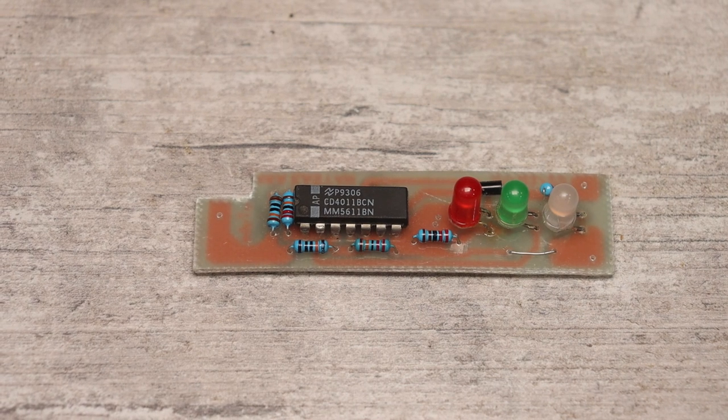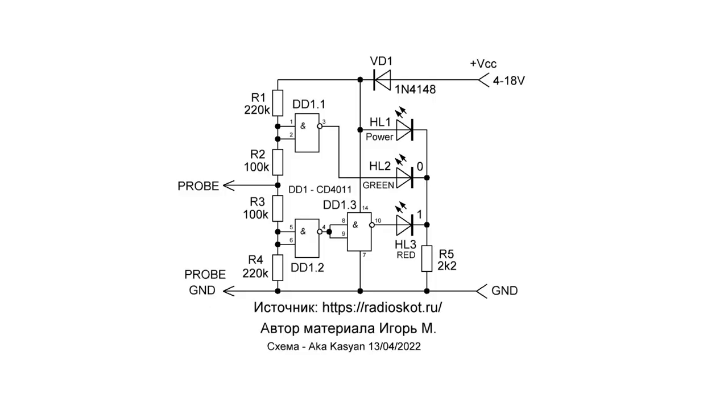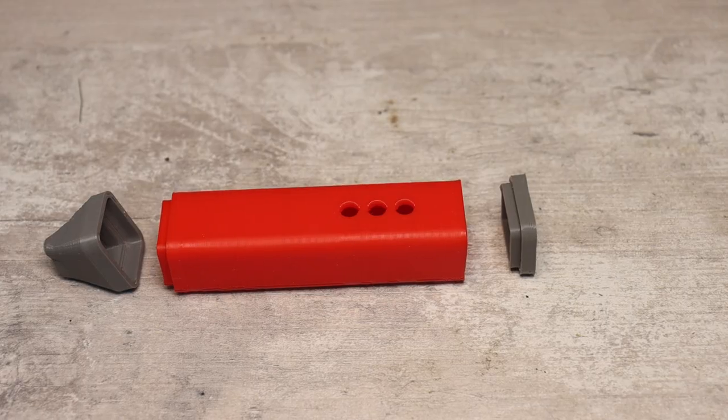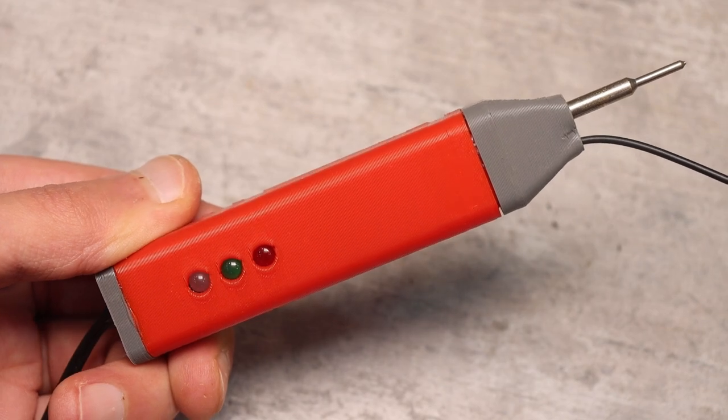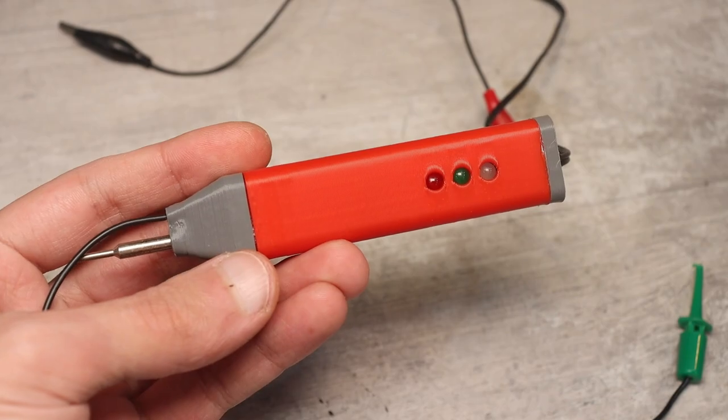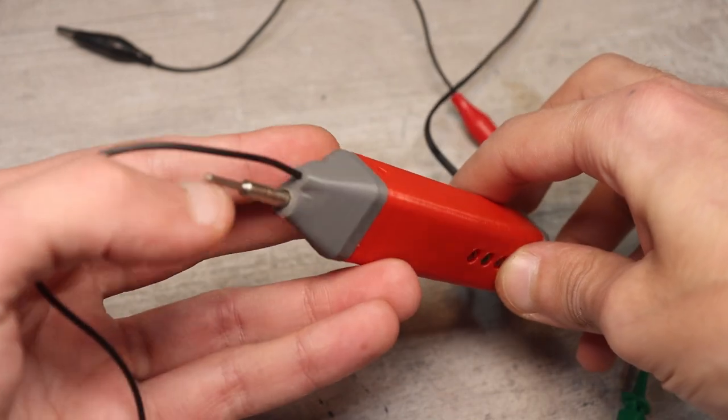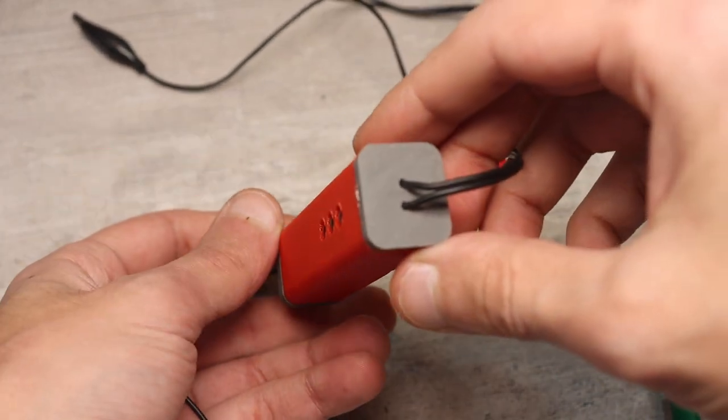The device is protected against reverse power supply polarity. The diode at the input is responsible for this. The housing of the probe is printed on a 3D printer, but a regular marker case is also convenient. In the description, you can find a link to the page where the printable model was downloaded from.